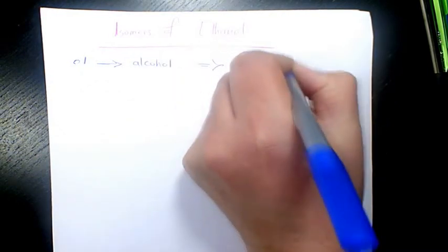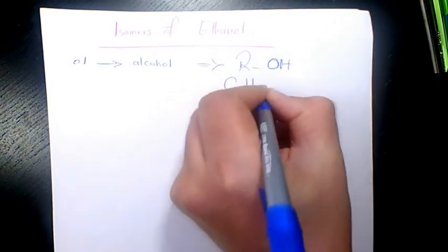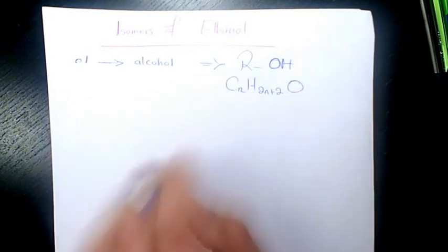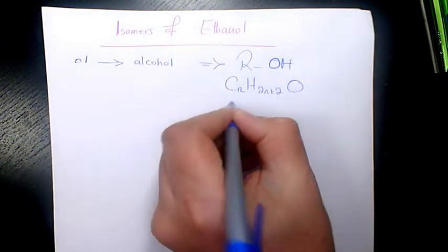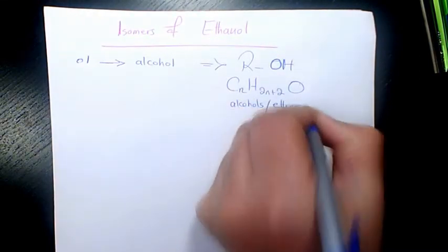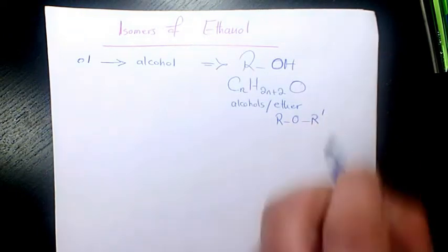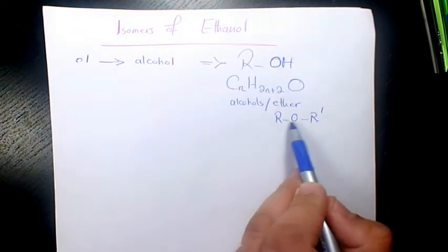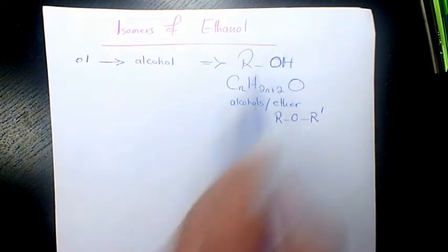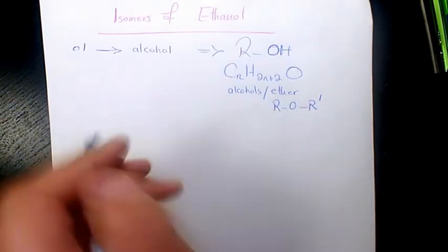All alcohols are connected to an OH group, and the general formula is CnH2n+2O—that's the general formula for alcohols and ethers. As you know, ether is R-O-R', so two different compounds connecting to each other by oxygen. Basically, alcohols and ethers are isomers.